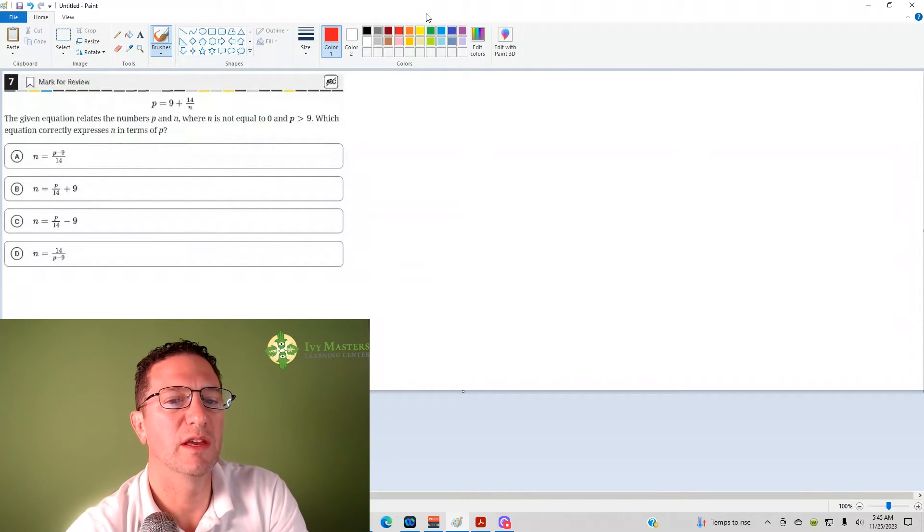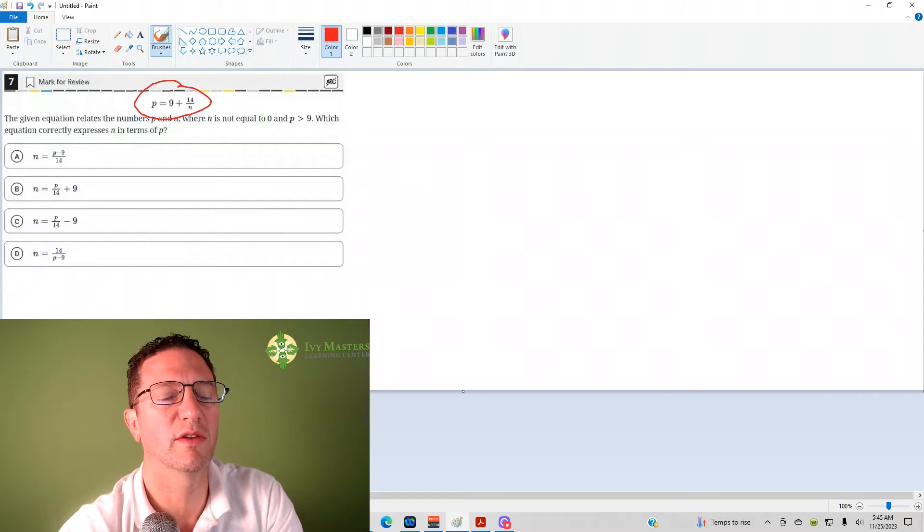Whenever you've got variables in the answer choices, you can pick numbers. When you have two variables, pick one and solve for the other. You always want to pick a number for the variable that is not alone, the variable in the expression, and then solve for the variable that's alone.